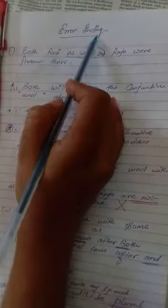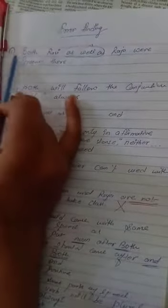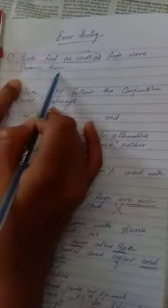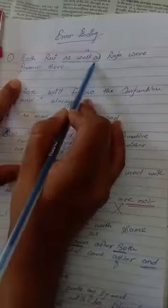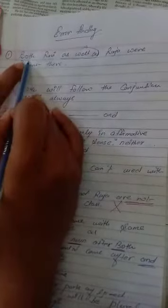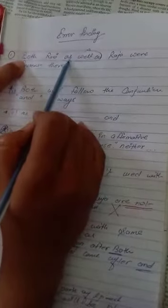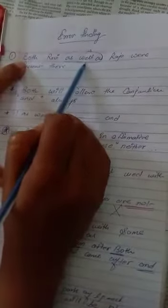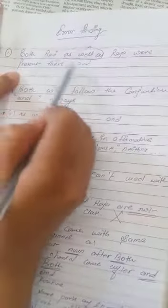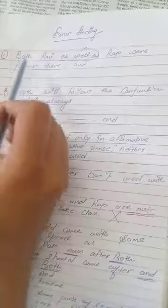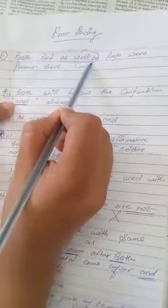First, both Ravi as well as Raja were present there. We used 'as well as' with 'both', but there is a rule: 'both' doesn't take 'as well as' as a conjunction. It uses 'and' always. We can put 'and' here to correct our sentence as 'both Ravi and Raja were present there'. First rule of both: both ke saath kabhi bhi as well as ka use nahi hota hai, even conjunction ke roop mein 'and' ka use karte hai.